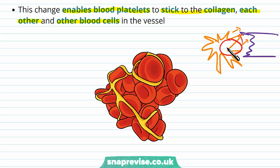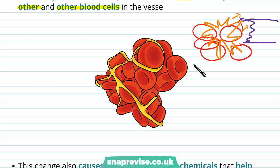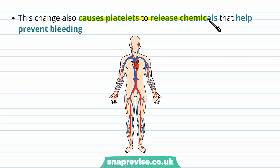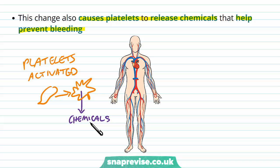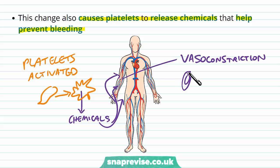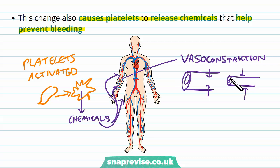The change in shape of the platelets also causes them to release chemicals which help prevent bleeding. As the platelets become activated, they release chemicals — usually hormones — which can act on nearby blood vessels and cause them to reduce bleeding. The way they usually do this is by vasoconstriction, which is when a vessel narrows itself so it has a reduced flow. This means there's less blood flowing to this area, blood can be diverted to areas which need it more, and therefore we can save ourselves from bleeding too much. So the platelets not only form a plug in the damaged wall, they also help to save blood that's being lost.